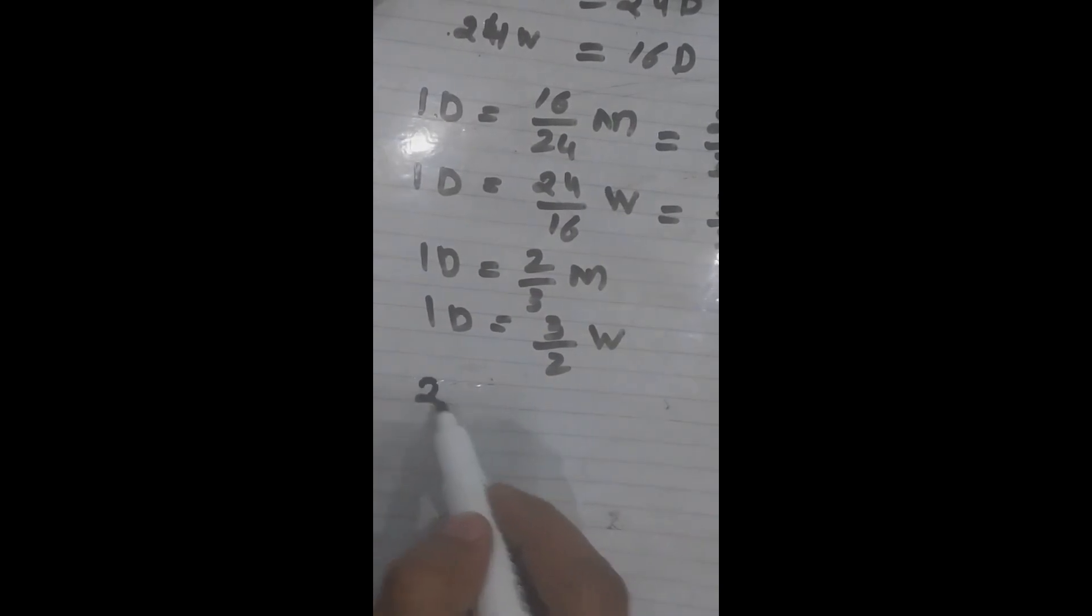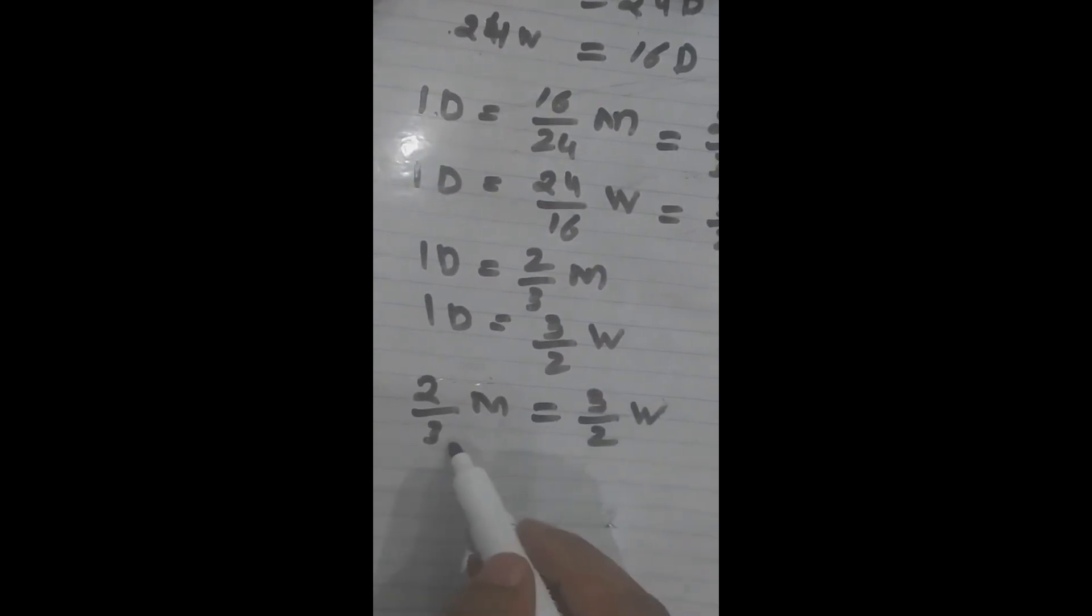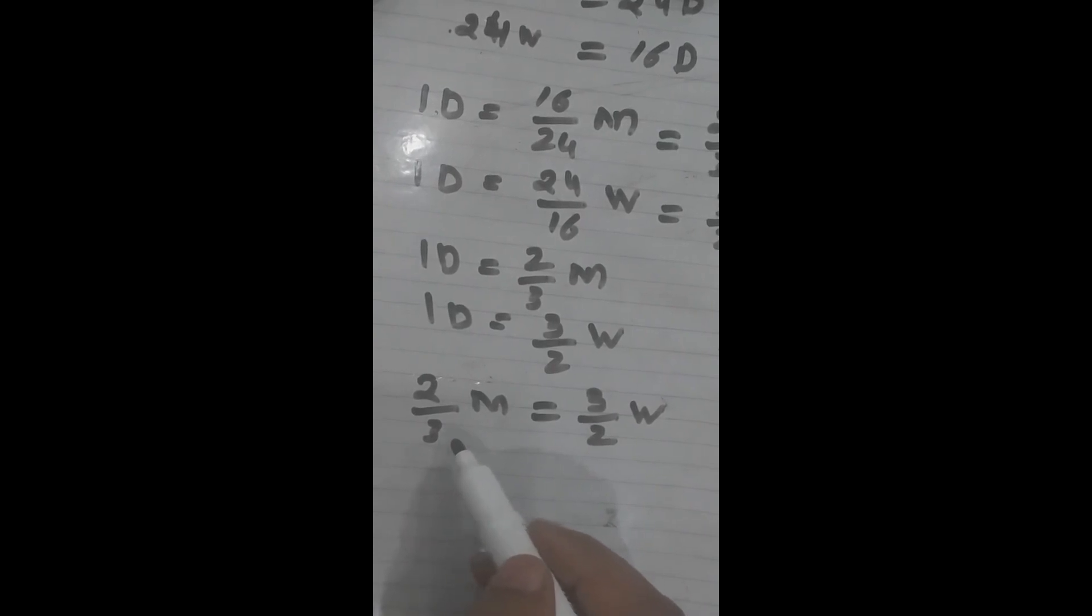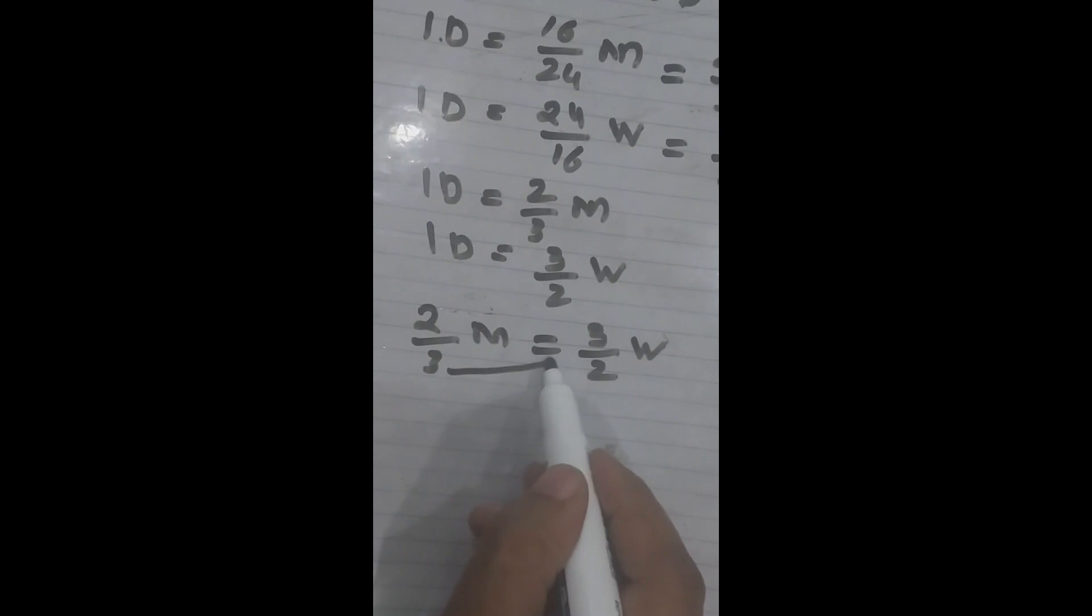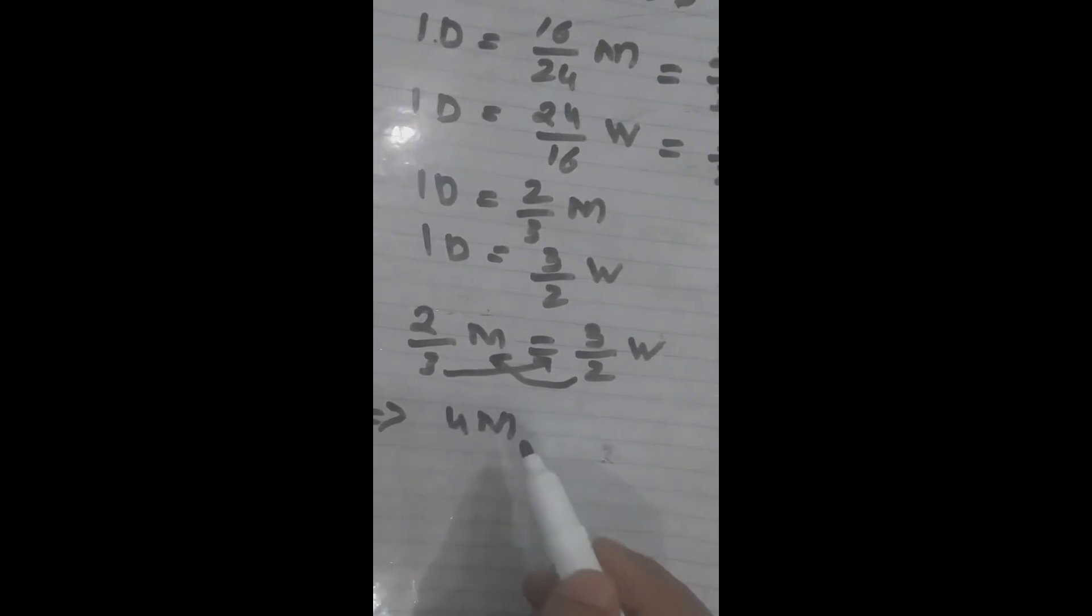We write it here like this: 2 by 3 M is equal to 3 by 2 W. Now we do the cross multiplication. We multiply these 3 up here and these 2 up here. It will give 4M is equal to 9W.